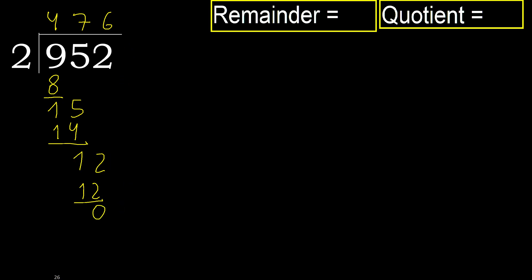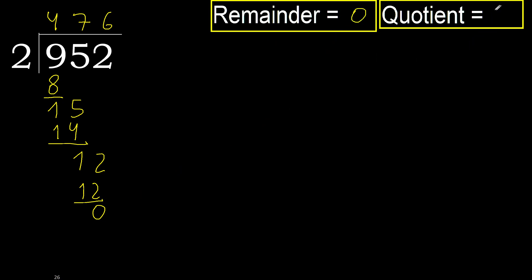There is no next number, therefore finish it. Ok, remainder 0 — therefore 952 divided by 2 is 476.